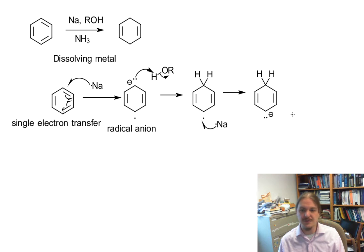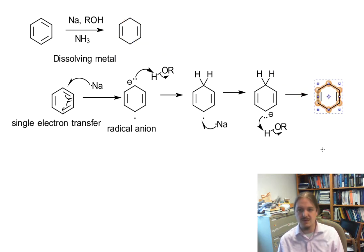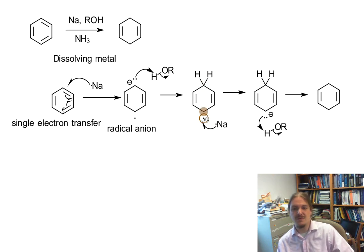And then that anion also picks up a proton. It's important to just know right now that this reaction produces the non-conjugated diene. And it has to do with what, once this radical forms and once it picks up its extra proton,